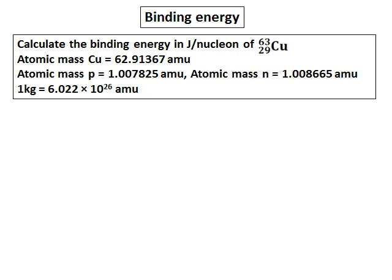We will do one question on binding energy. Calculate the binding energy in joules per nucleon of copper-63 with atomic number 29. The atomic mass of copper is given, atomic mass of proton and atomic mass of neutron is also given, and the conversion unit of atomic mass unit to kilogram is also given.